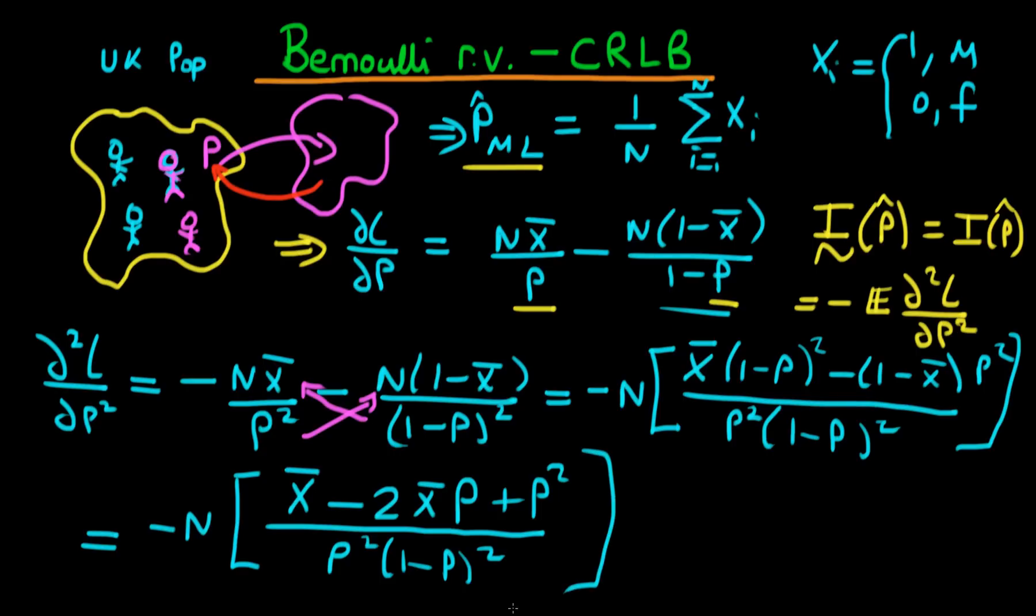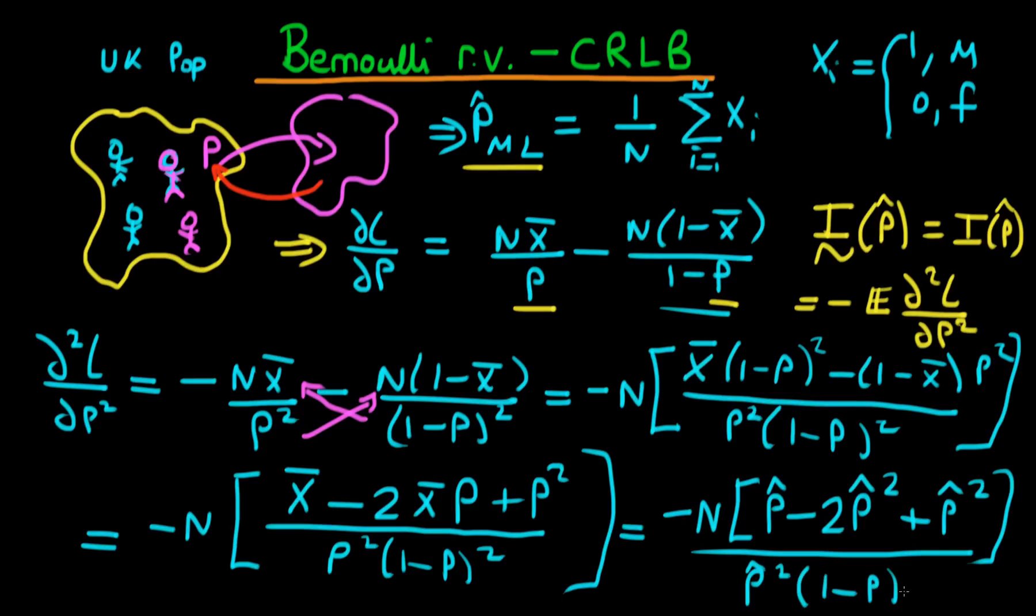Okay, so at the moment as we left this, this doesn't look particularly illuminating. But then what we can do is we can realize that what we're actually trying to do is estimate the information matrix, because we don't actually have this population parameter P. So what we're actually going to do is we're going to substitute in P hat for P. And we know that P hat is just equal to X bar. So if we just replace all the X bars with P hat and all the P's with P hat, then what we're left with is minus N times, we're going to have open brackets, P hat minus two P hat all squared plus P hat squared, all divided through by P hat squared times one minus P hat all squared.